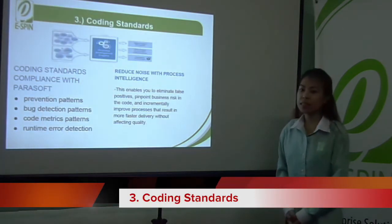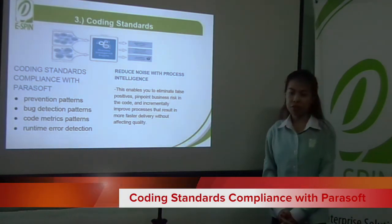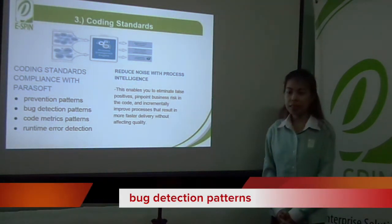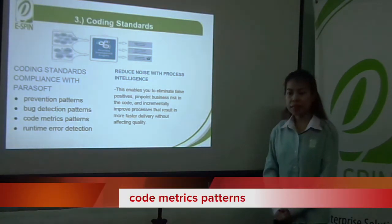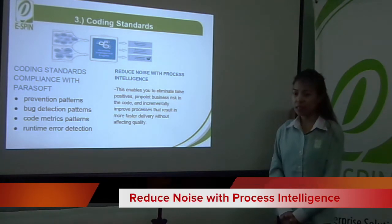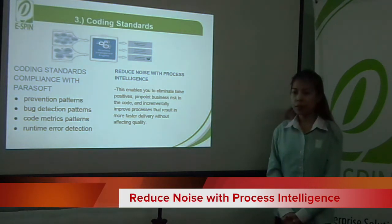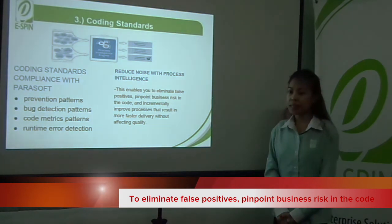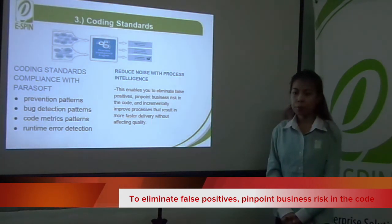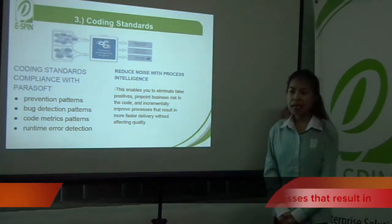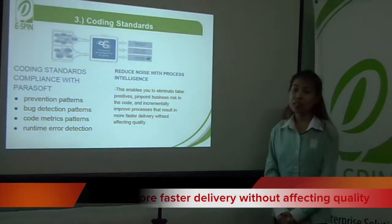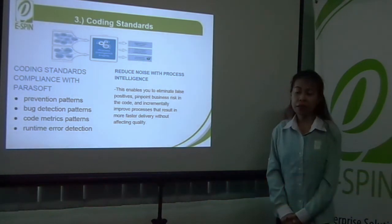Coding standards compliance with Parasoft includes prevention rules, bug detection rules, code metrics patterns, and runtime error detection. Reduce noise with the Process Intelligence Engine, which enables you to eliminate false positives, pinpoint business risk in the code, and incrementally improve processes resulting in faster delivery without affecting quality.